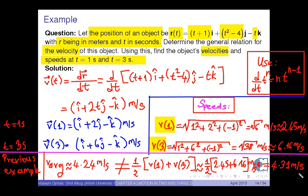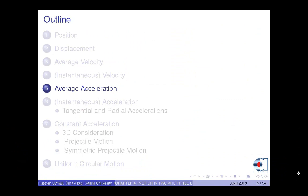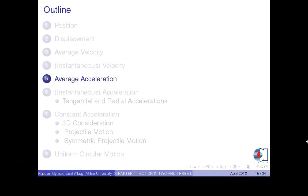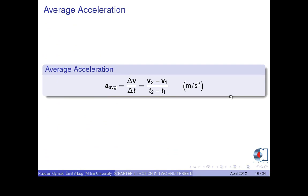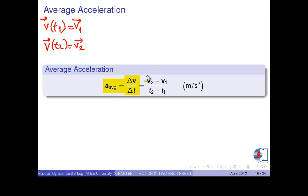Alright, let's move on to the topic of average acceleration. For an object whose velocity at time t1 is v1 and at a later time t2 is v2, we define its average acceleration as a average equals delta v over delta t equals (v2 minus v1) over (t2 minus t1), which is in meters per second squared.